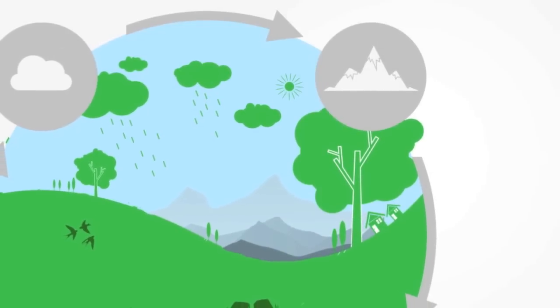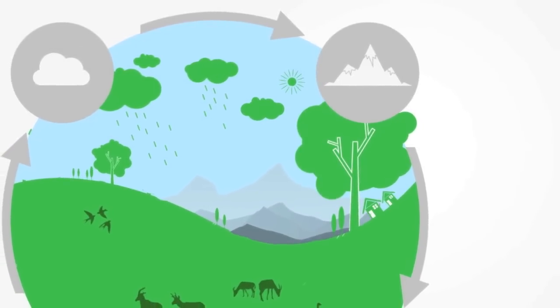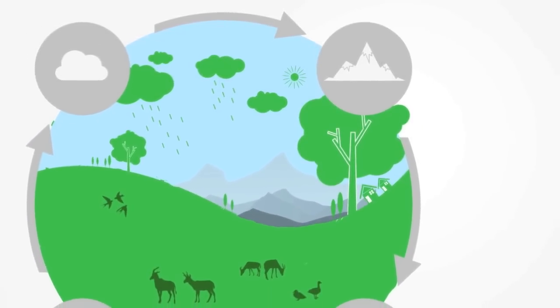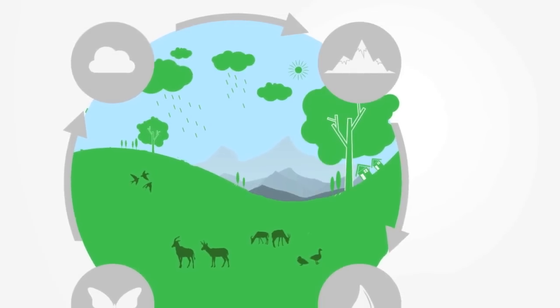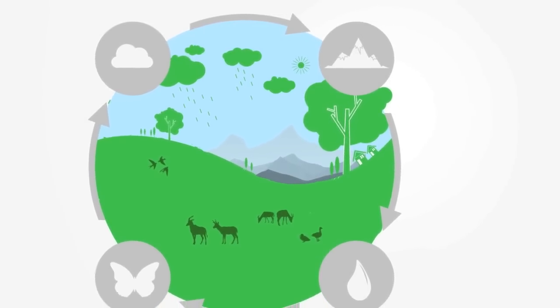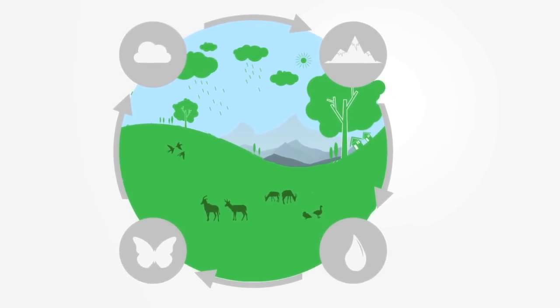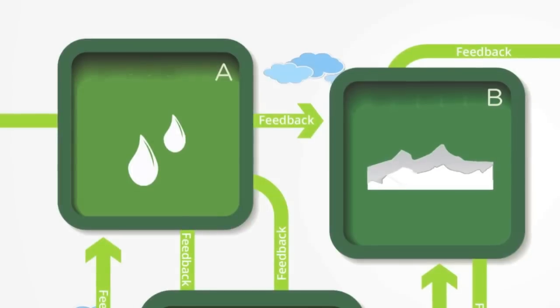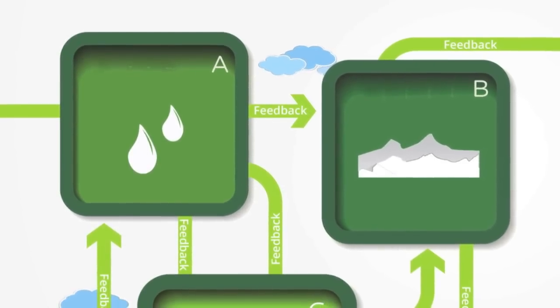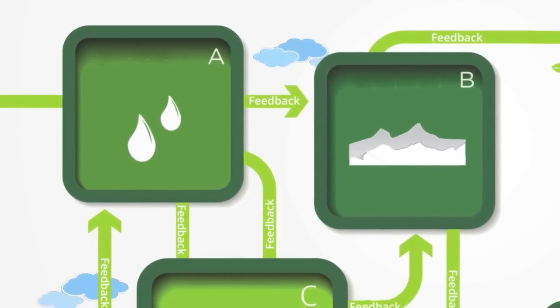These different spheres interact to create a unique state or ecosystem. An ecosystem is the combination of a community of biological organisms and a particular physical environment with which they interact. Thus we can understand an ecosystem as a certain combination or mix of our different spheres and the climate.